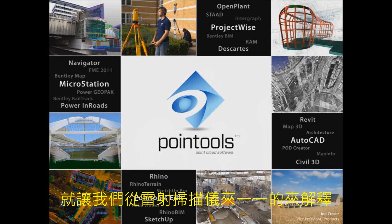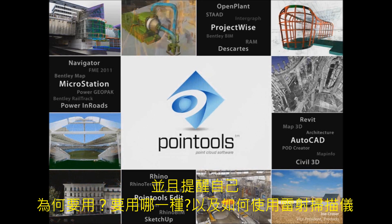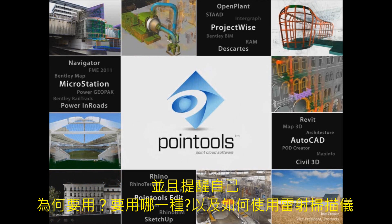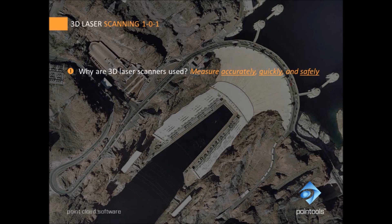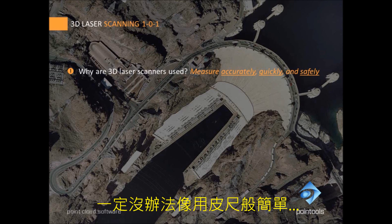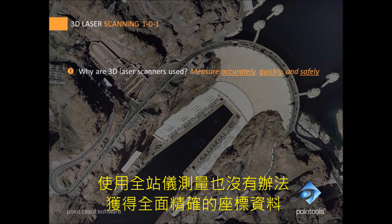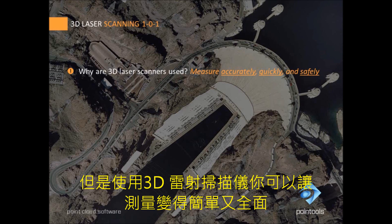Let's start with a 3D Laser Scanning 101 and remind ourselves about why, what and how it's used. 3D laser scanning is used to accurately, quickly and safely measure something. Take the Hoover Dam — you're not going to measure that easily with a tape, and you're not going to measure it comprehensively with a total station. With a 3D laser scanner, you'll do both.